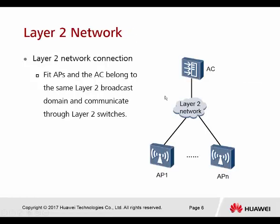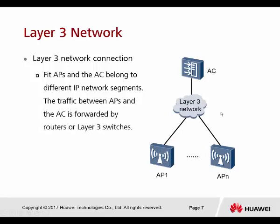In Layer 2 networking, the FIT AP and the AC belong to the same Layer 2 broadcast domain. The AC and the AP connect through the same VLAN, so we call it a Layer 2 network. For Layer 3, the FIT AP and the AC belong to different IP network segments. Traffic between the AP and the AC is forwarded by a router or Layer 3 switch, so we call this a Layer 3 network.